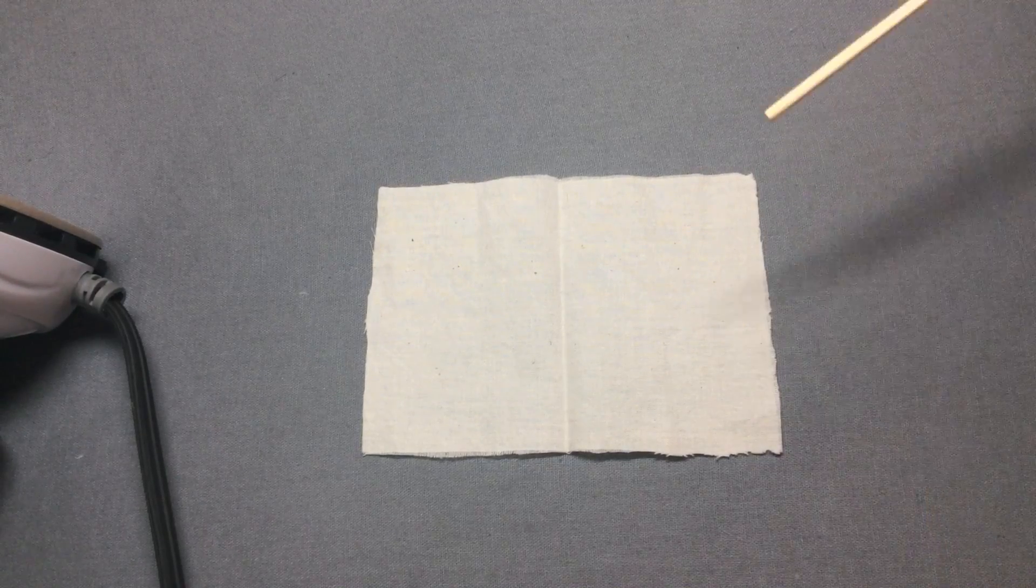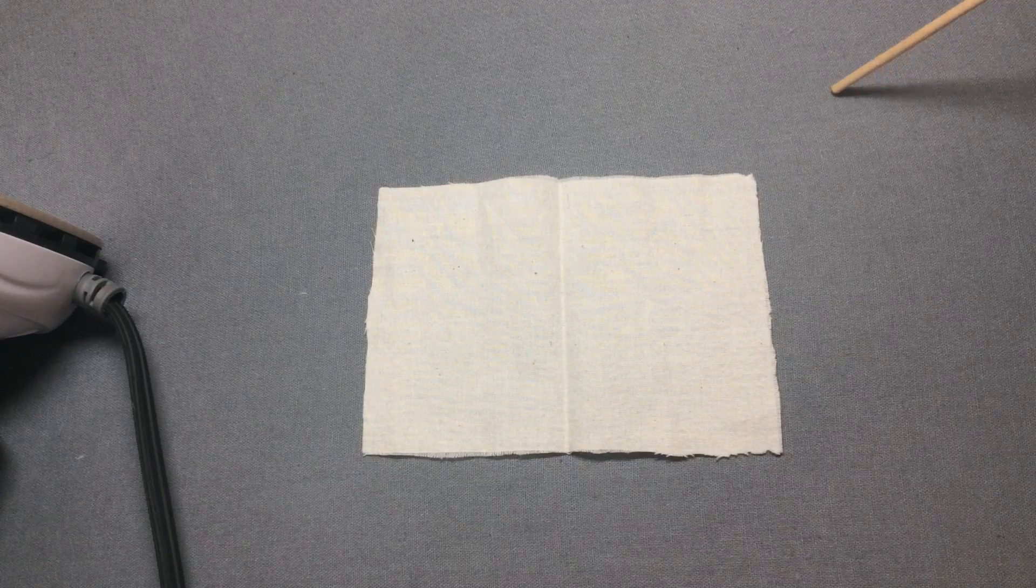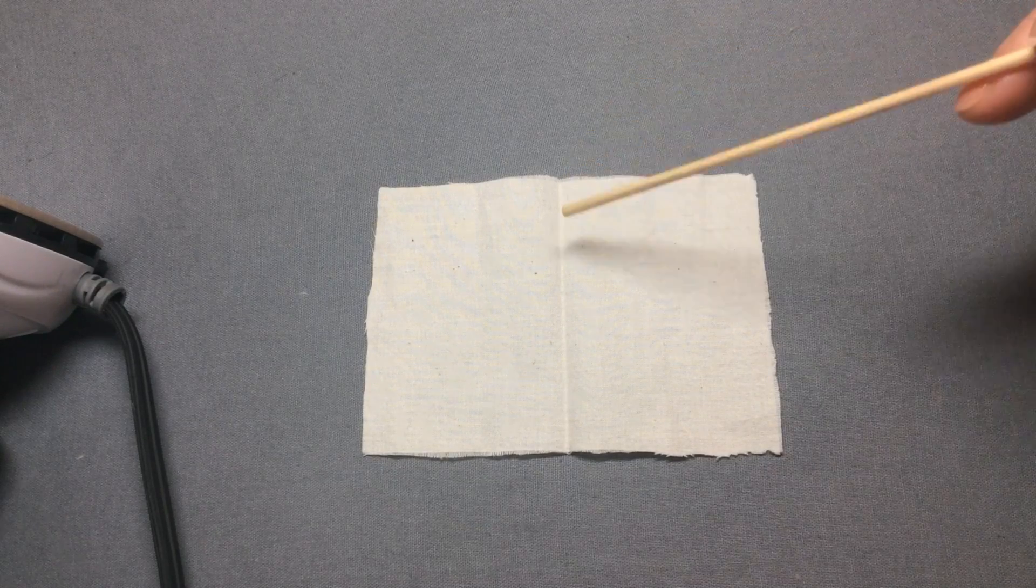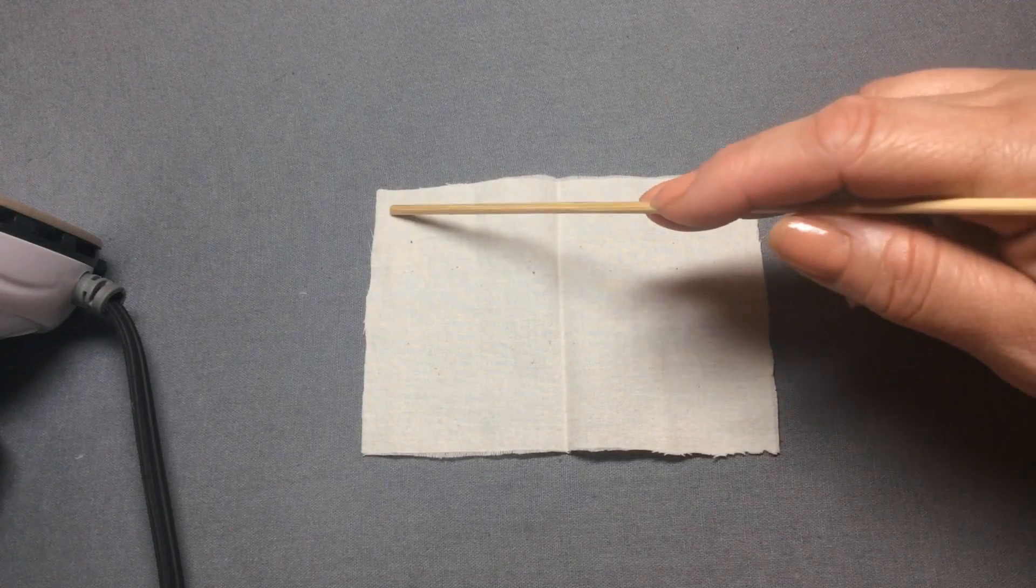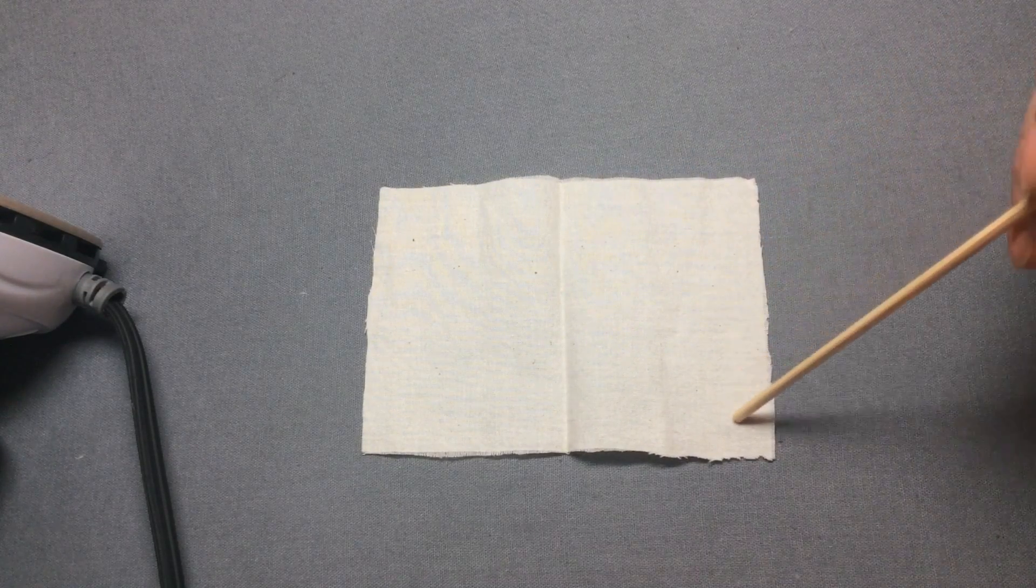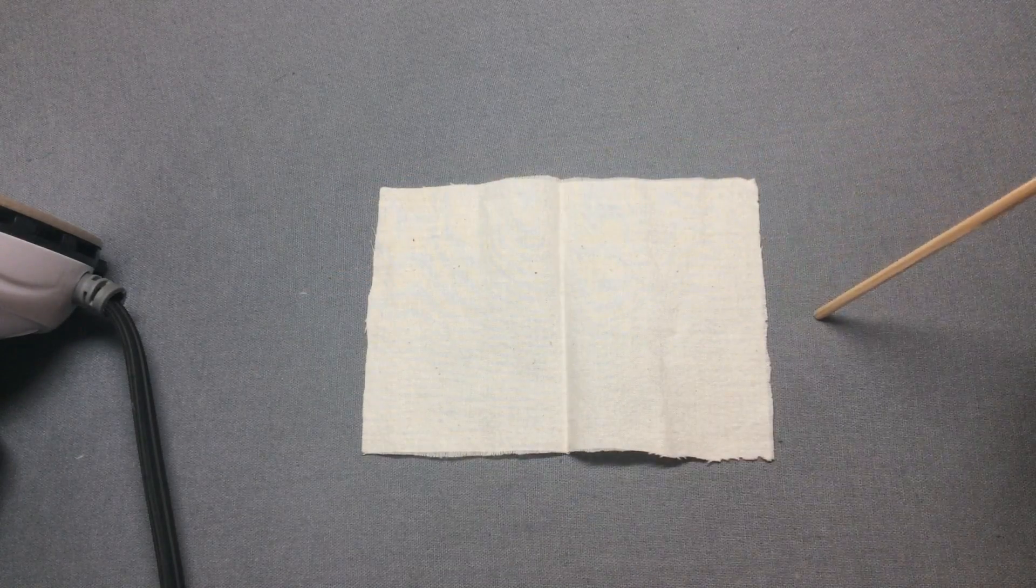This sample is the blanket stitch, not to be confused with the buttonhole stitch. I've got a piece of muslin here that is five inches wide by three and three quarter inches. I did not pink the edges on purpose.